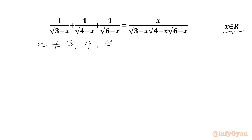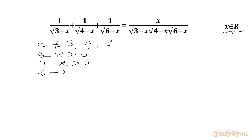Now we will say our radicands must be positive for real x. So I can write here: 3 minus x should be greater than 0, 4 minus x should be greater than 0, and 6 minus x should be greater than 0.